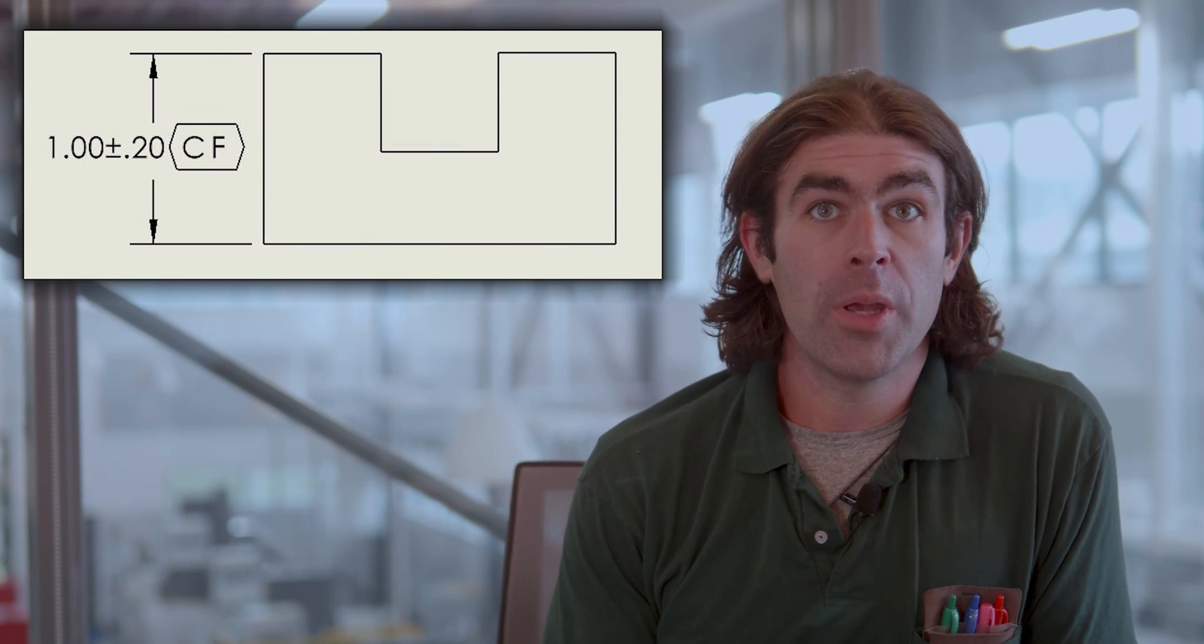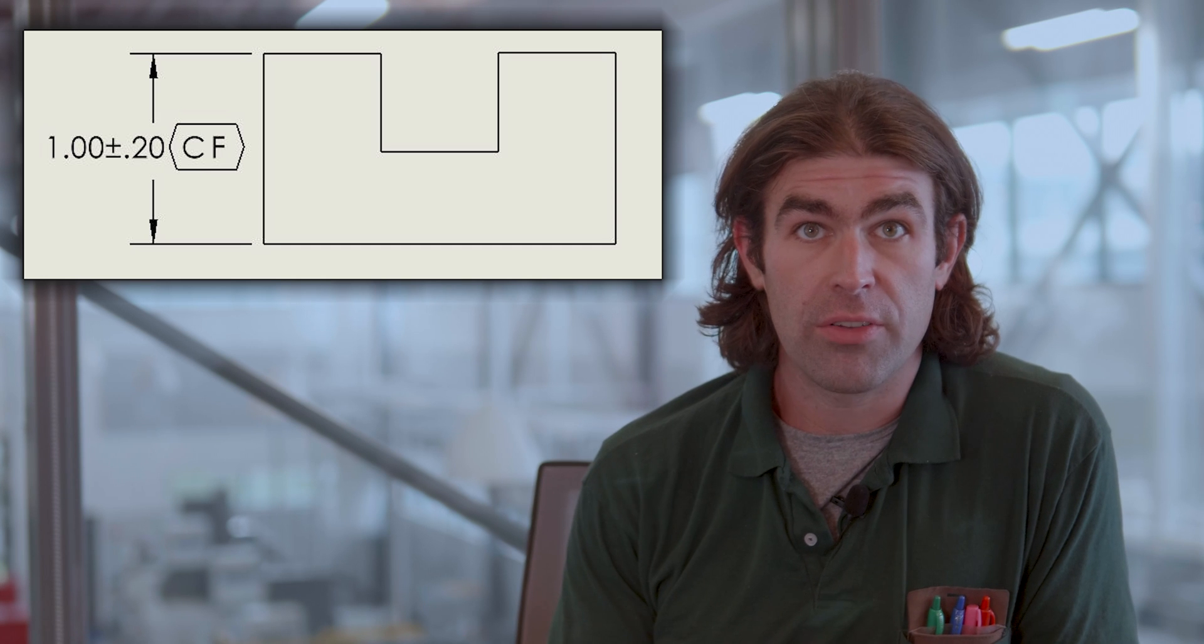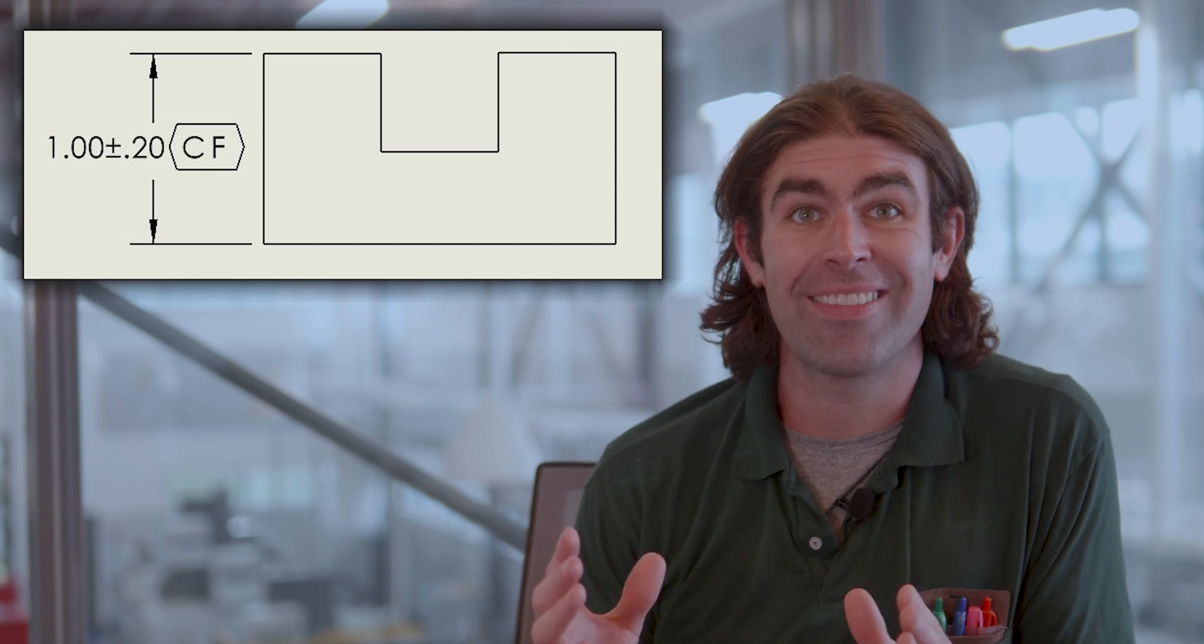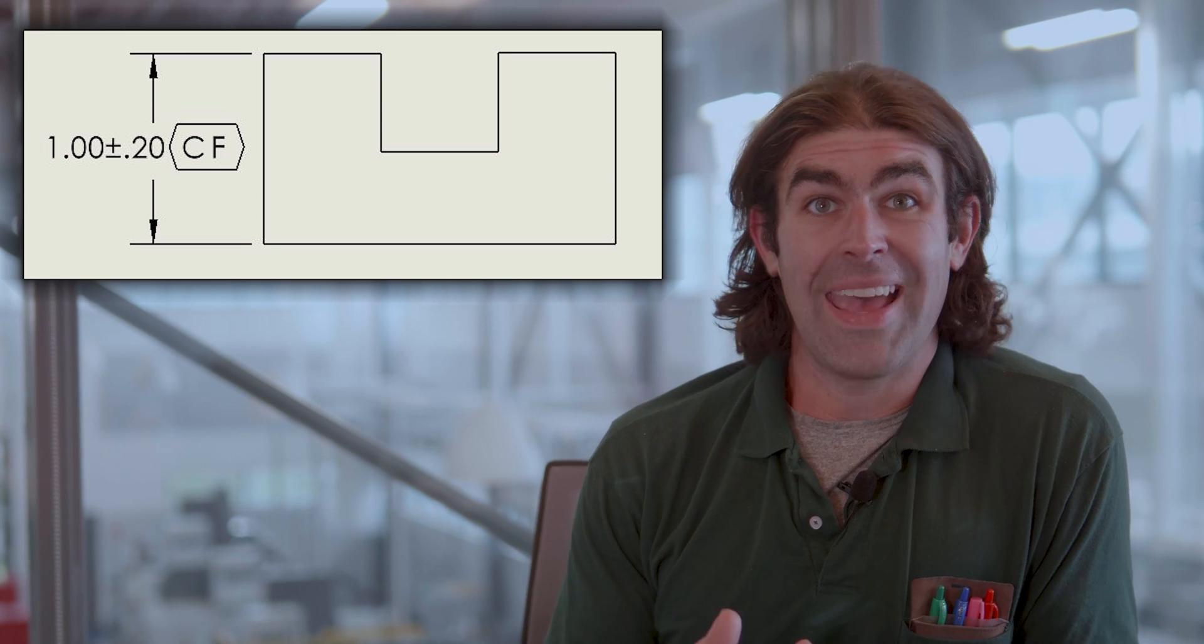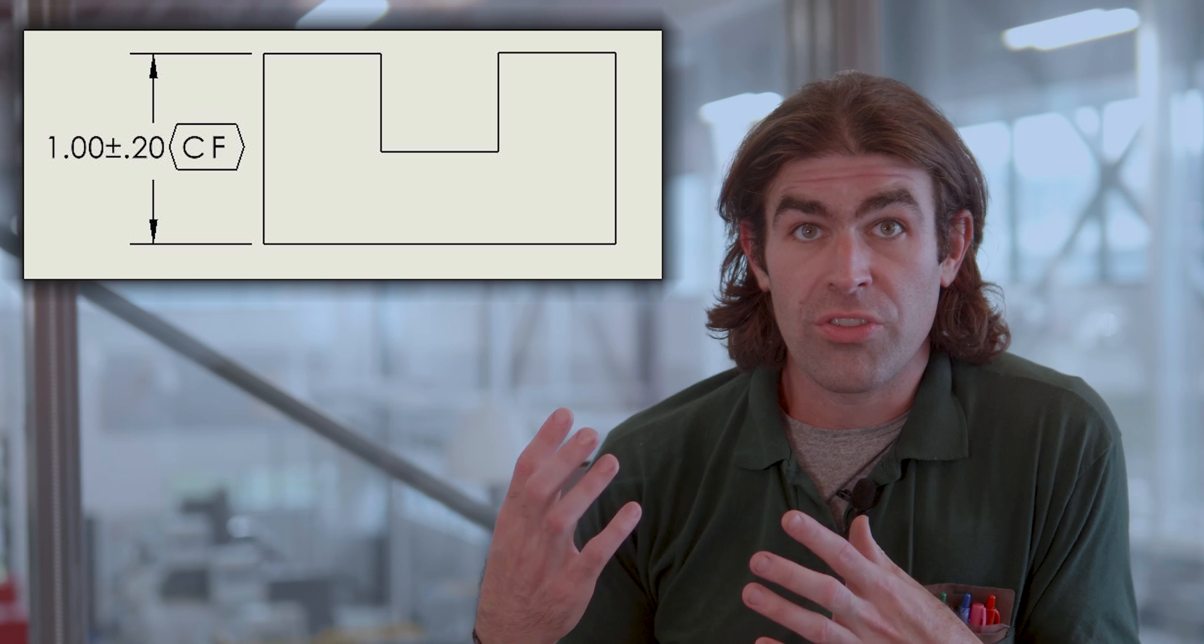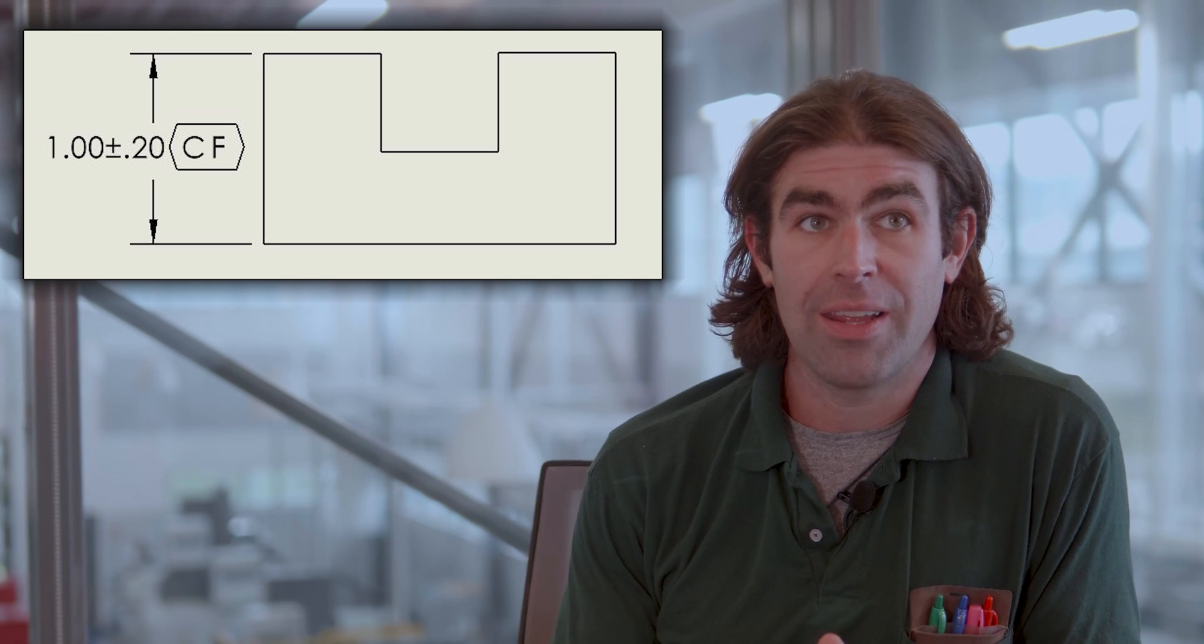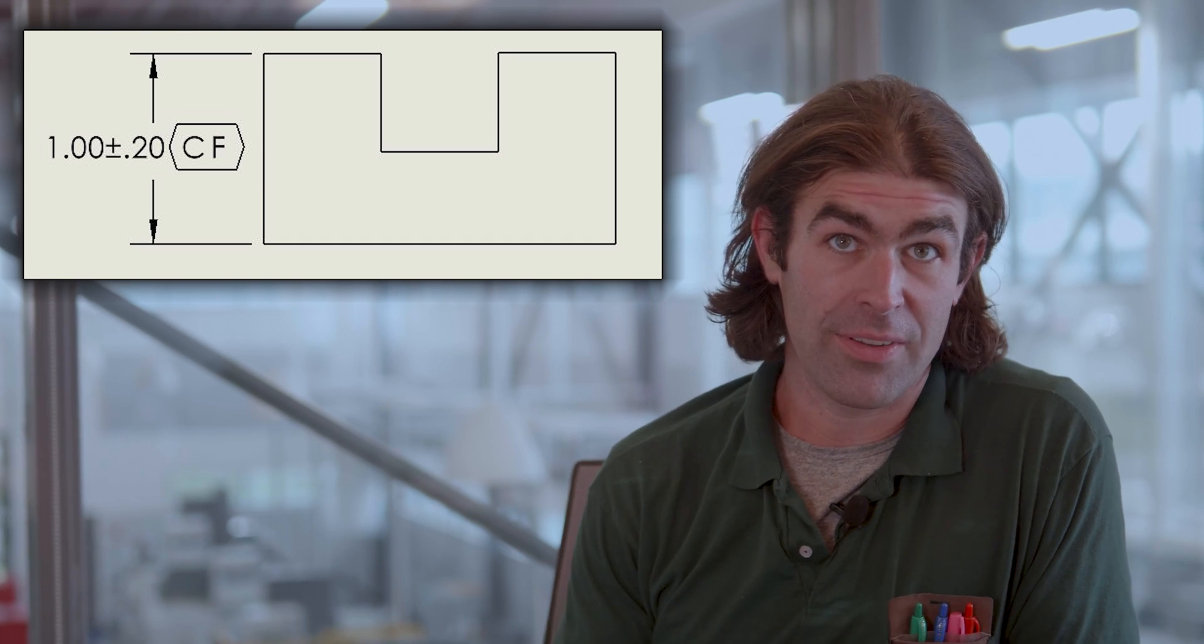The first is the continuous feature symbol. What the continuous feature symbol does is treat two surfaces or two features of size as the same feature. You still only have the limits of size to deal with, so you don't have coplanarity. In this example I have one inch plus or minus two hundred thousandths.